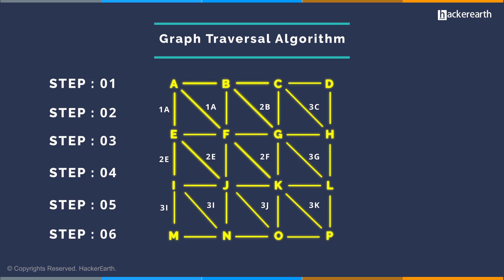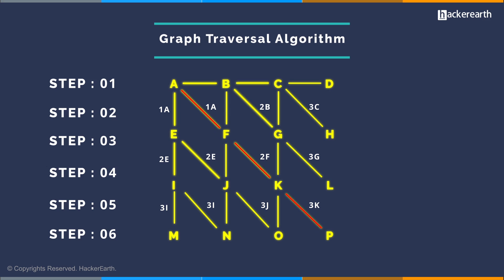Step 5: Repeat the process until all nodes on the grid are visited at least once. Step 6: Once all nodes are visited, you find that the distance required to reach from A to P is 3 and the shortest route is diagonal. Now remove all vertices not used to connect the nodes. Such graphs are called minimum spanning trees, where each node is connected to at least one vertex.